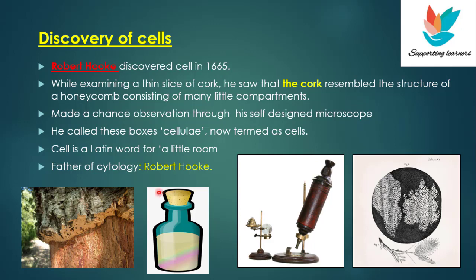You must have seen cork used in wine bottles — they are sealed or closed with the help of this cork. He observed a very thin slice of this cork under his microscope and saw that it resembled the structure of a honeycomb, with many tiny little compartments — boxes, actually. He called these boxes 'cellulae,' and today they are called cells, but the name cellulae was given by Robert Hooke.